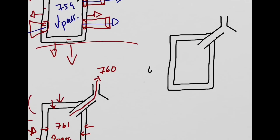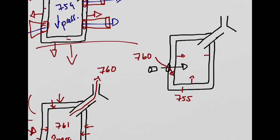A pneumothorax is a condition in which the pleural sac integrity is lost. In this example, a bullet has created a hole in the pleural sac. The atmospheric pressure of 760 millimeters of mercury will now rush into the pleural sac because it has a lower pressure. This will cause a push on the lung and increase the pressure on the lung, causing the air to be exhaled out of the body. This is actually called a collapsed lung.